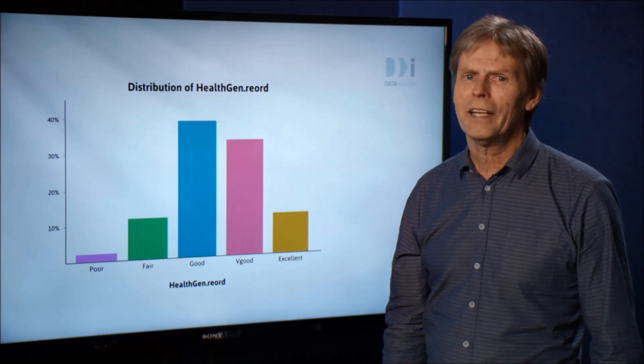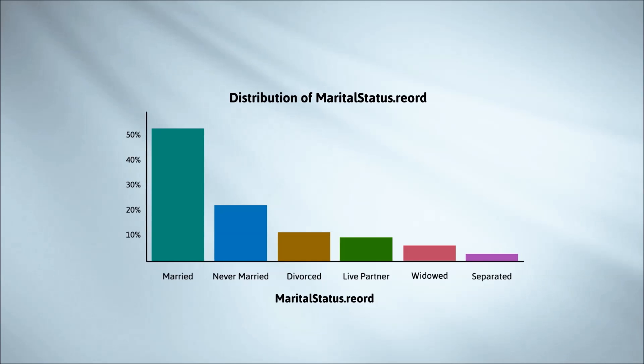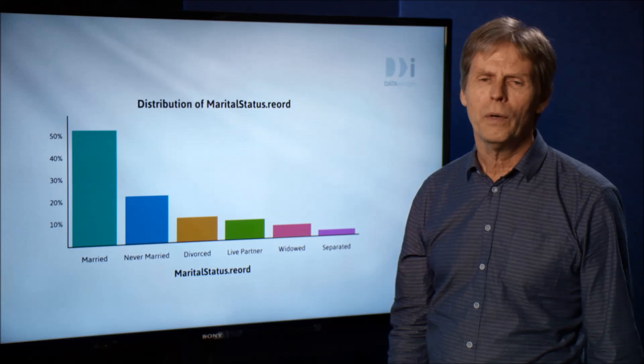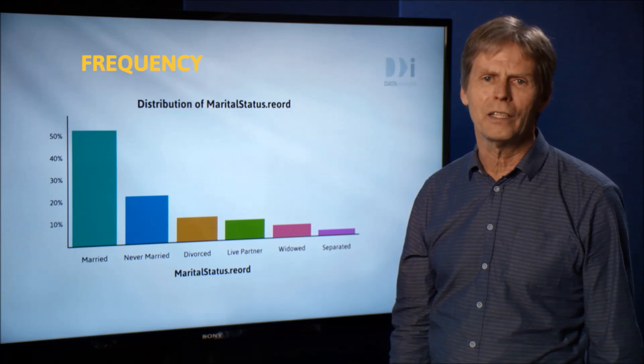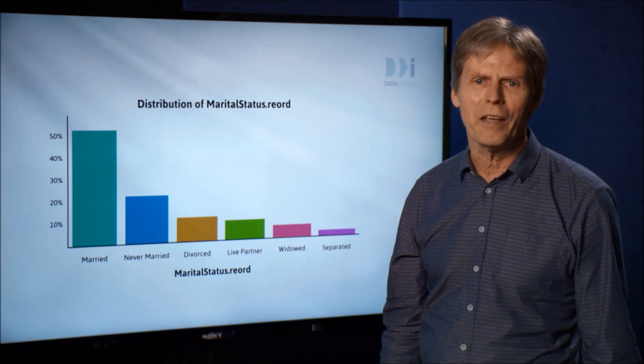If there's no particular reason for setting categories in some other order, ordering them by height order is usually the most informative. We call this ordering by frequency. Frequency is just another name for a count.